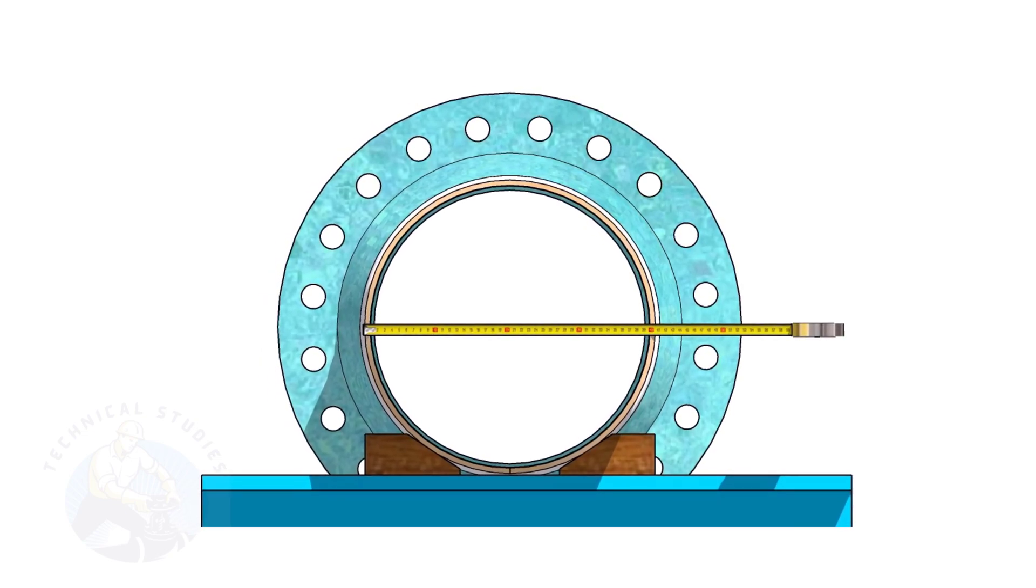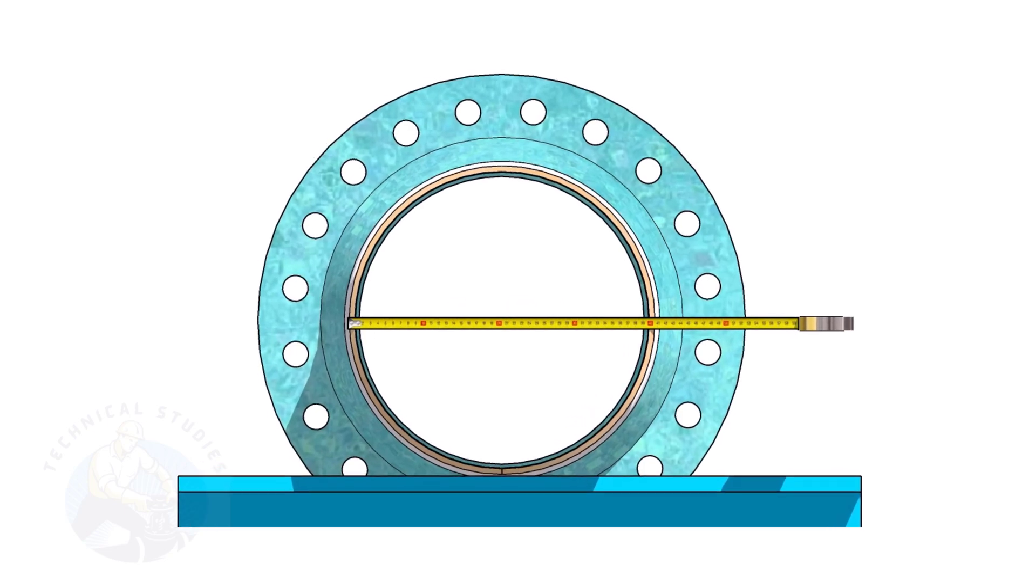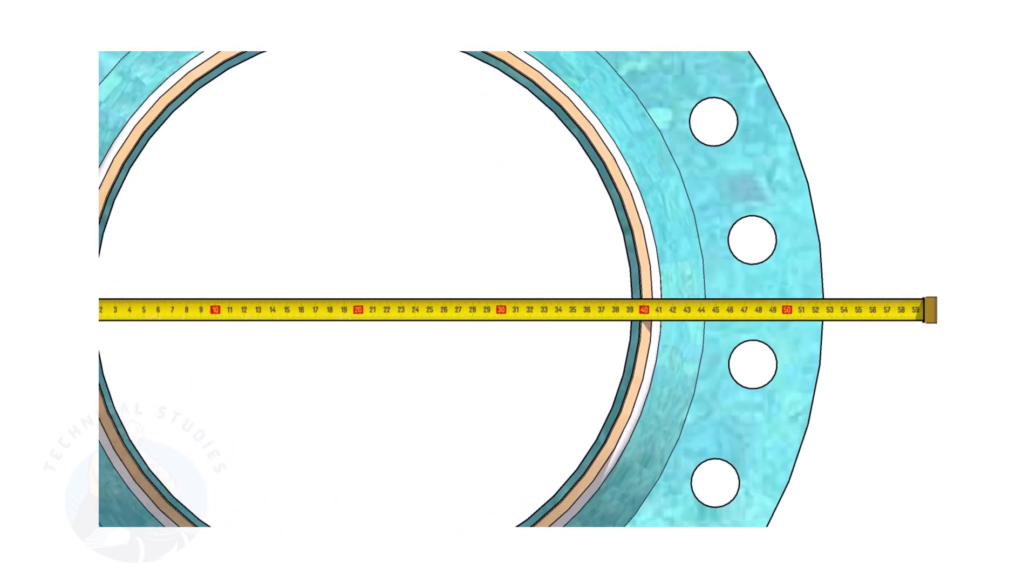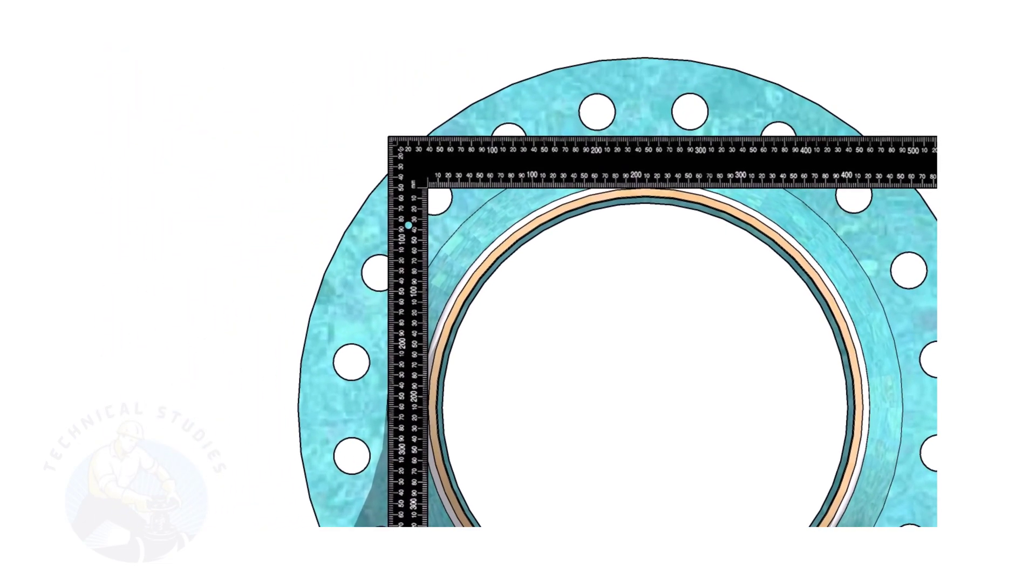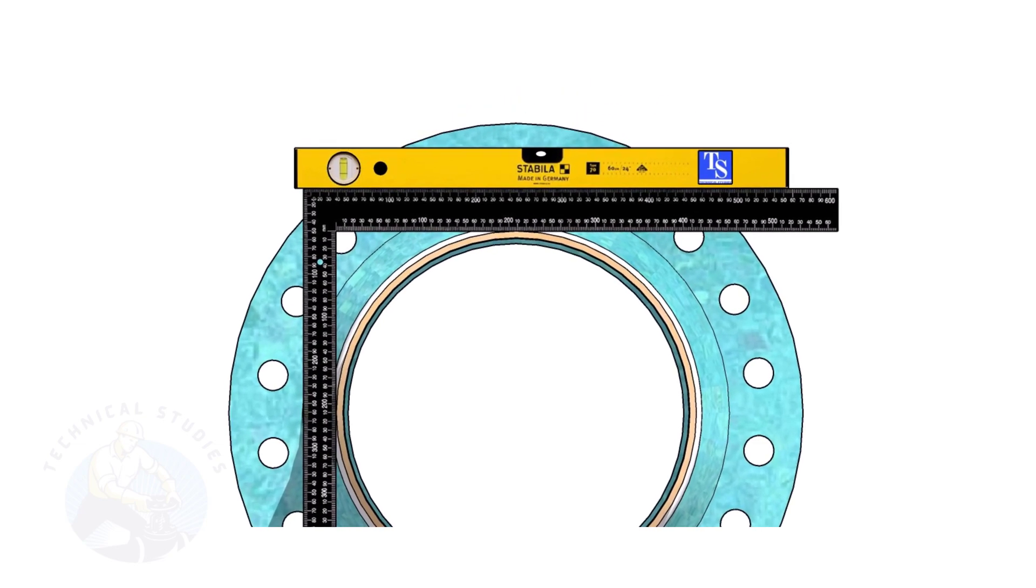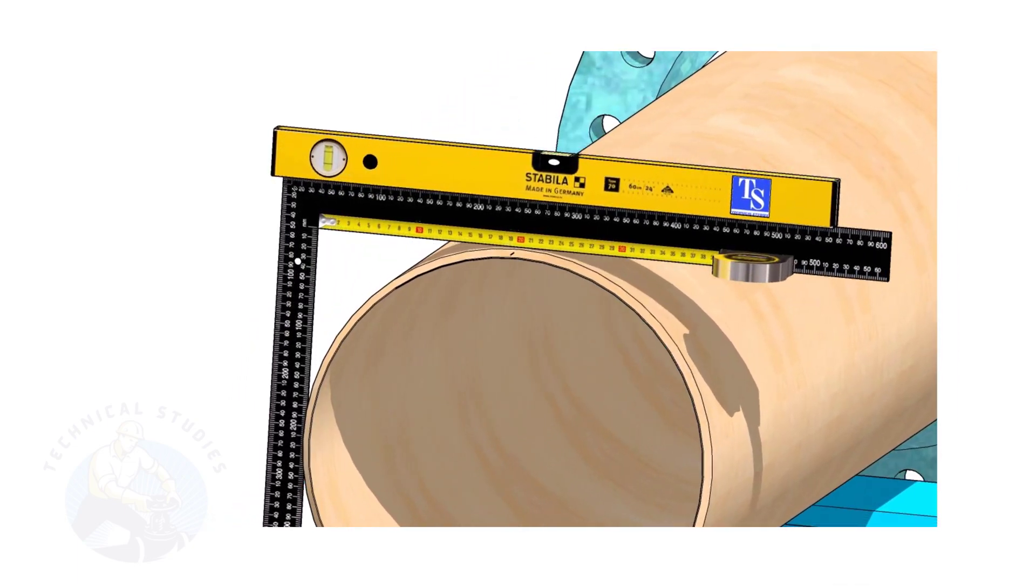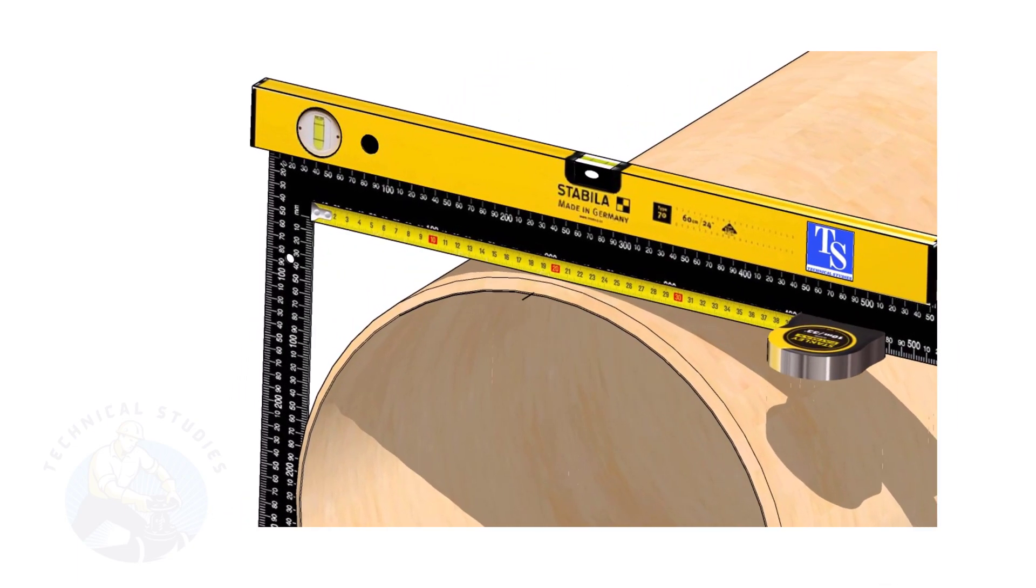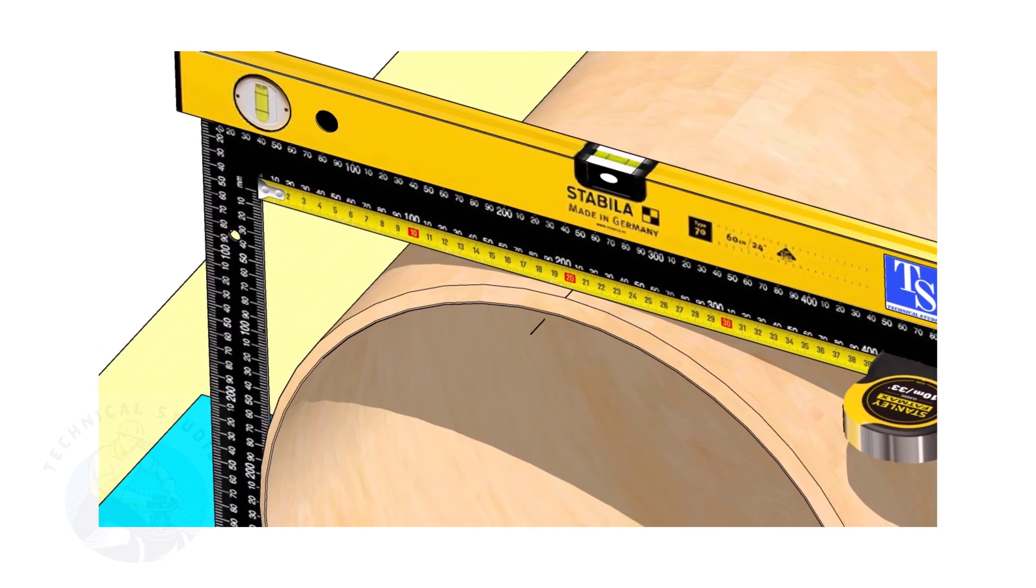Check the outer diameter of the pipe. Here, the diameter of the pipe is 406 millimeters. Hold a large right angle on the pipe as shown. Put a spirit level on the right angle and correct the top level. Mark half OD of the pipe on the top side. Here, the half OD is 203 millimeters.